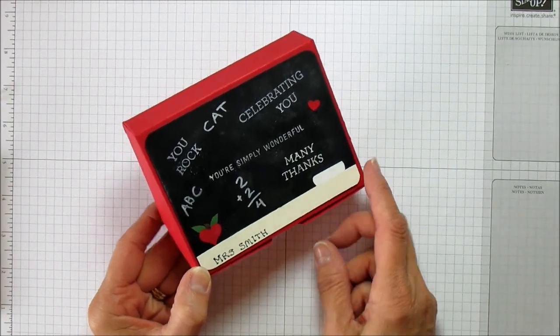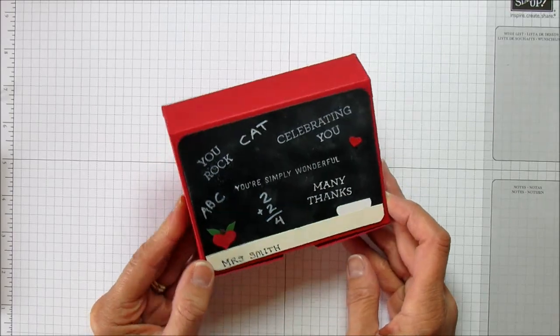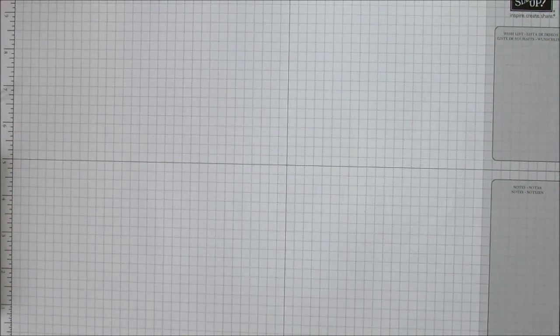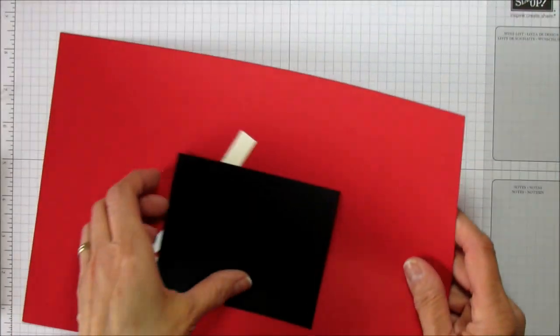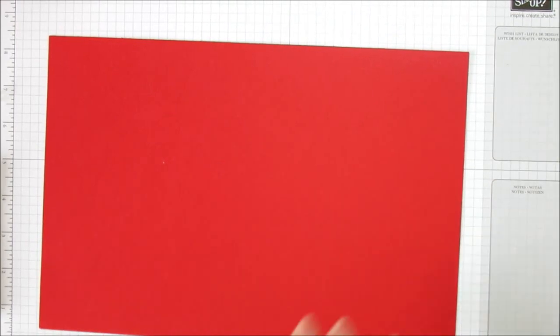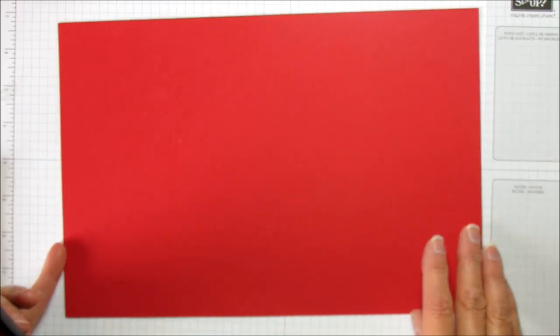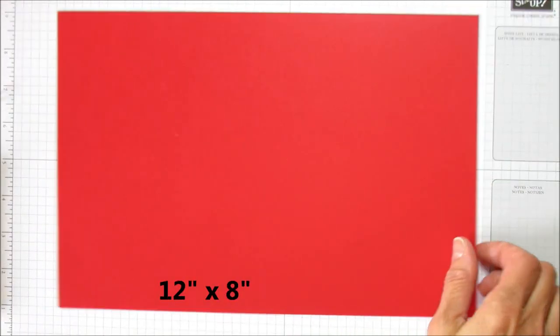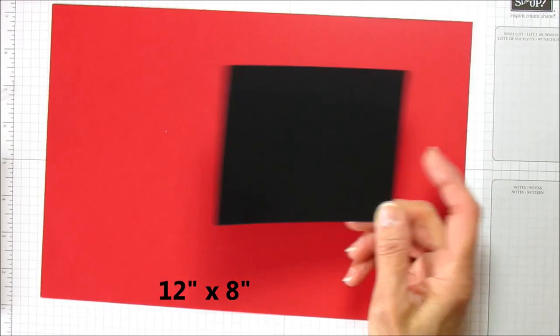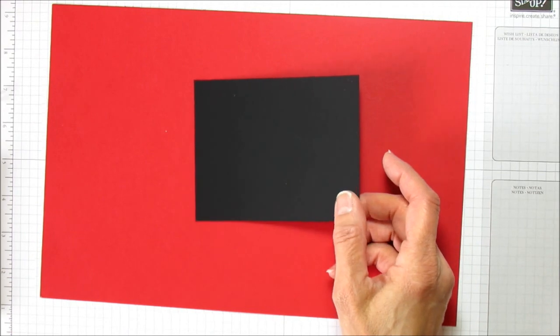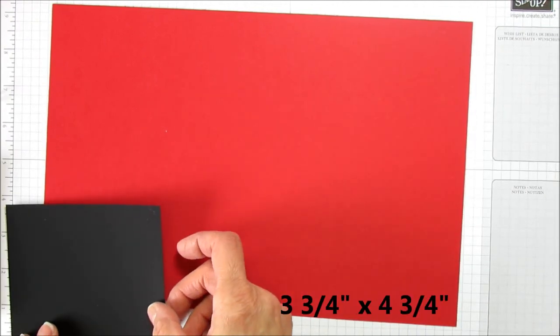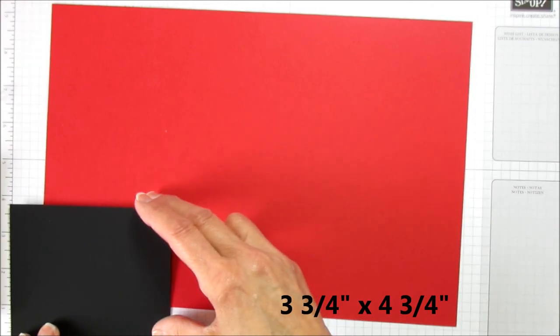Let's go ahead and get started. What you'll need is a piece of real red, 12 by 8 inches, and then this is our new chalkboard paper, and that's what I used for the little chalkboard on top.